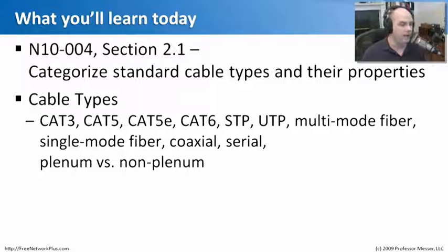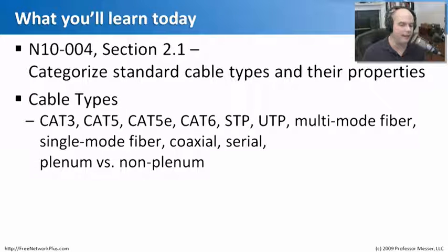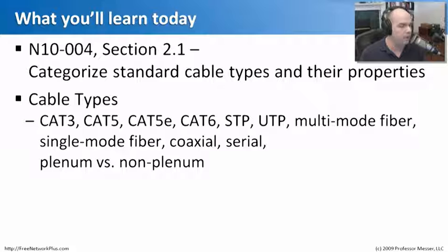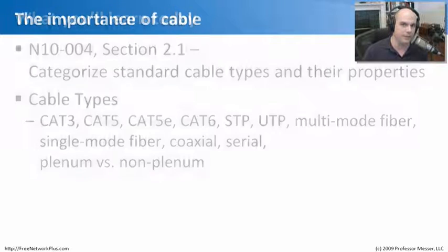These CAT3, CAT5, CAT5e — these are probably terms that you've heard before, but you weren't exactly certain what they really meant, this whole CAT type thing. You've also got STP and UTP type cables. You've got different fiber connections. You've got coaxial cables. And we'll go through each one of those and give you an idea of what you need to know for the Network Plus exam.